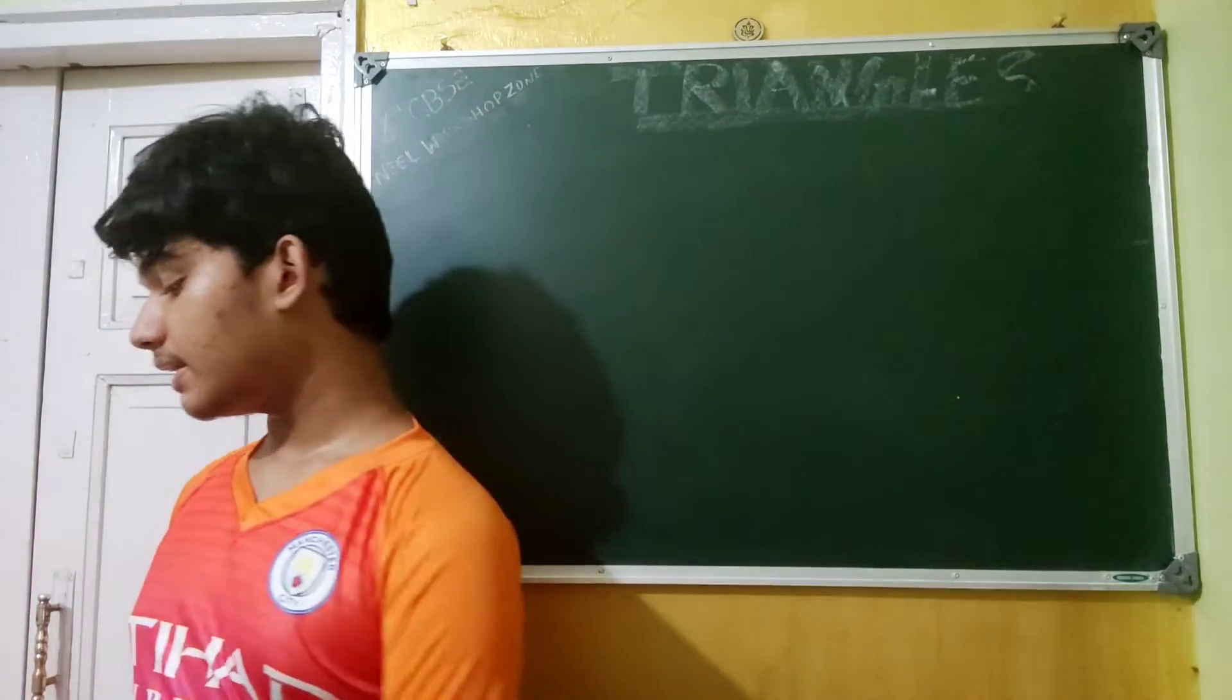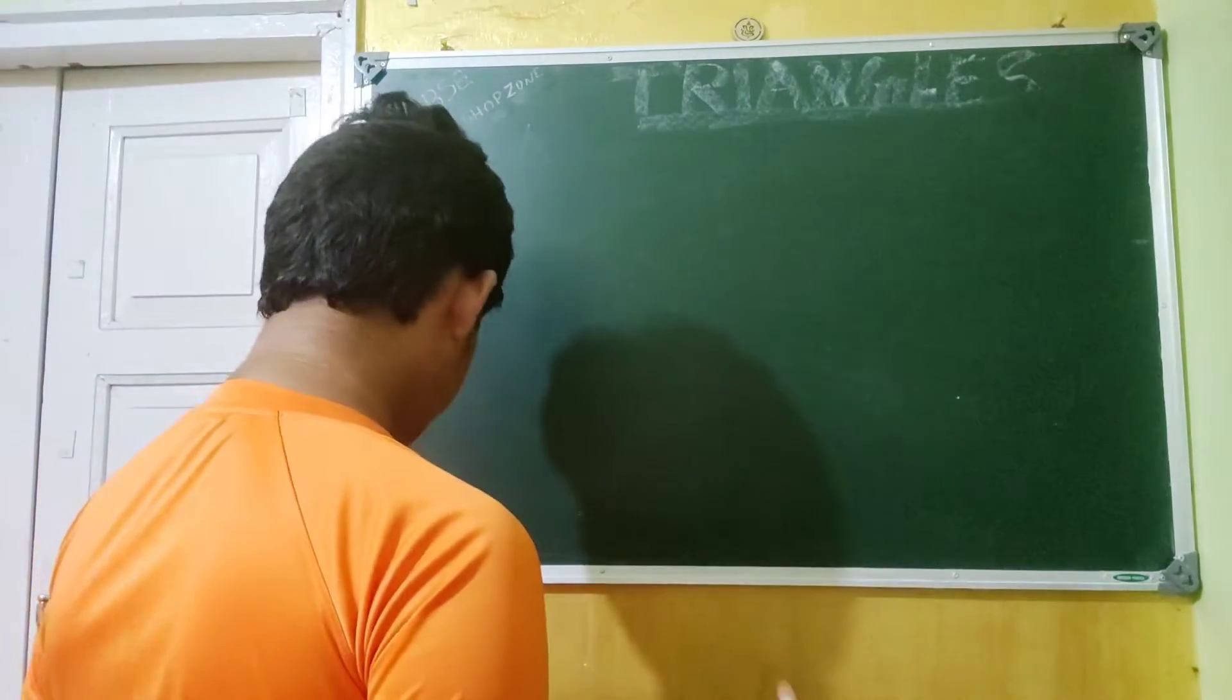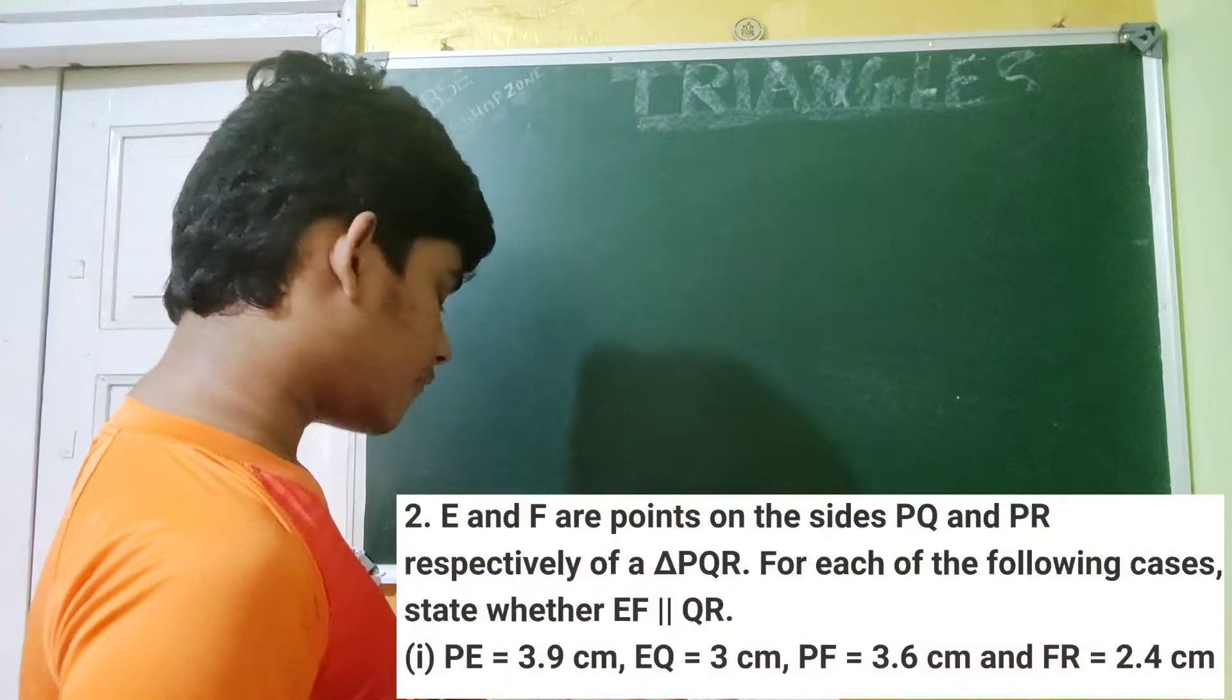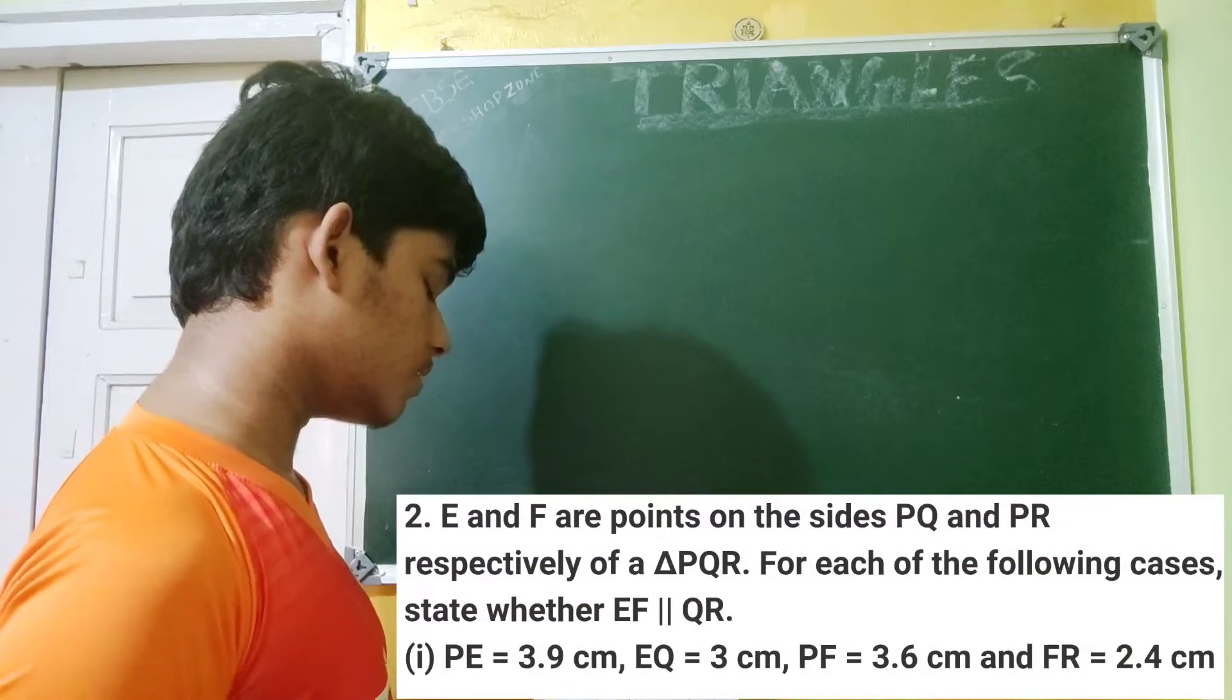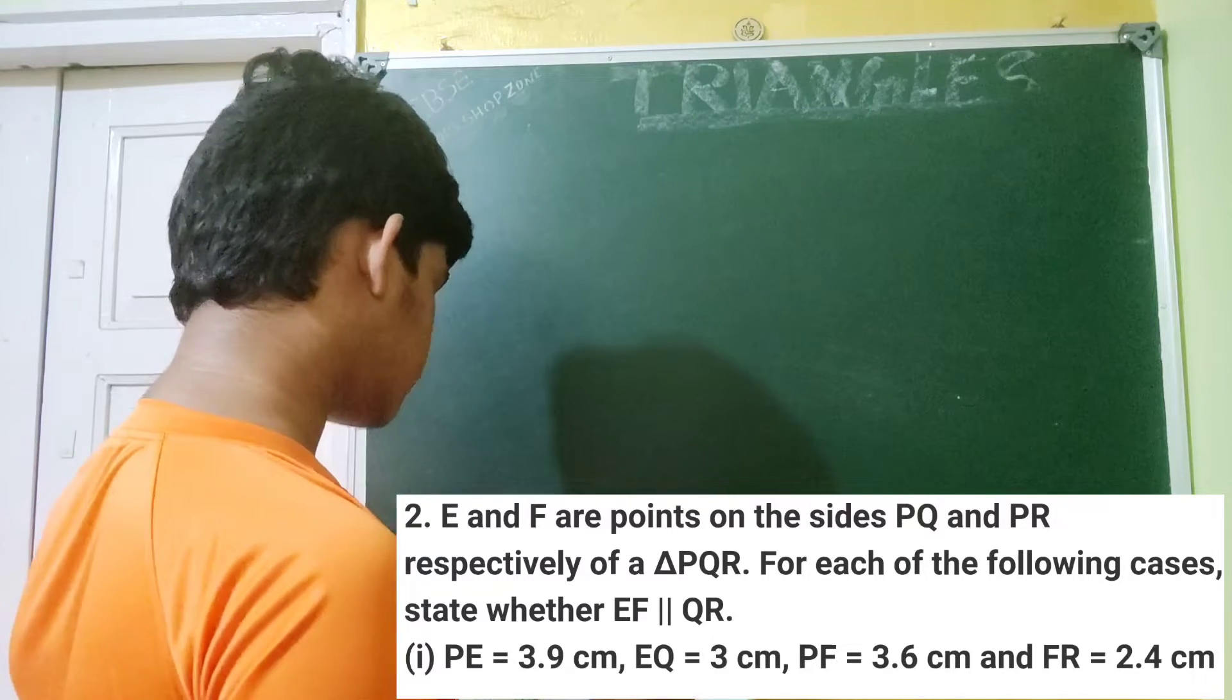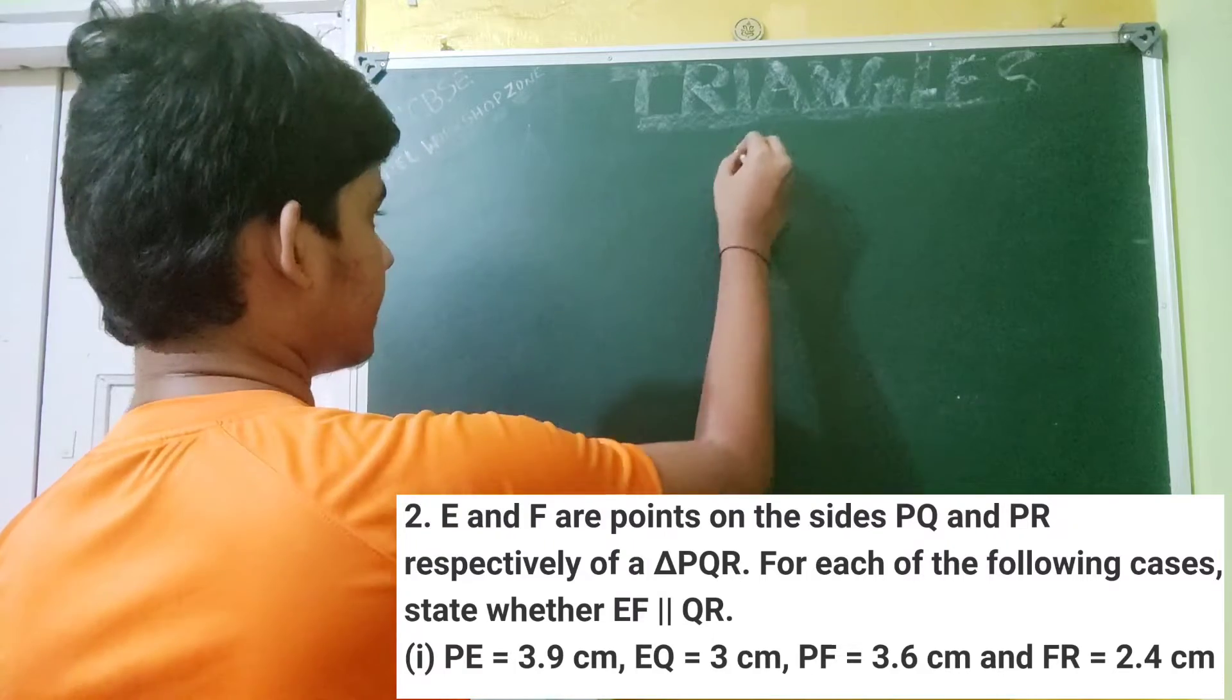So I've got some questions right here. Let's take the first question and solve it. So the first question is, E and F are points on sides PQ and PR respectively of a triangle PQR. For each of the following cases, check whether EF is parallel to QR. They gave some questions.